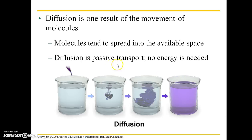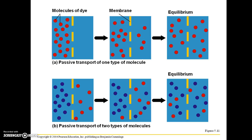Passive transport is just transport in which no energy is actually used. A good example of diffusion is if you have a beaker of water and you put a drop of food dye in it. Initially that dye is going to be very concentrated in one area, but after a while that dye is going to spread out and use the space available to it. Eventually you're going to have water that is evenly distributed with the dye. This same process happens when you spray perfume or air freshener — initially those molecules are very concentrated but they spread out into the space available to them. So we have passive transport of one type of molecule here.